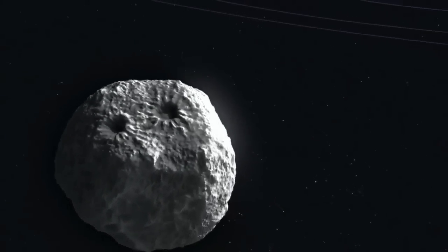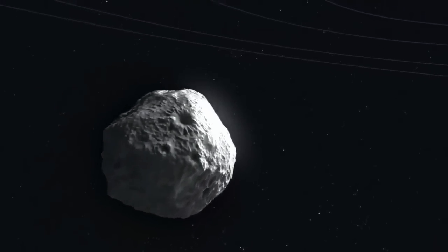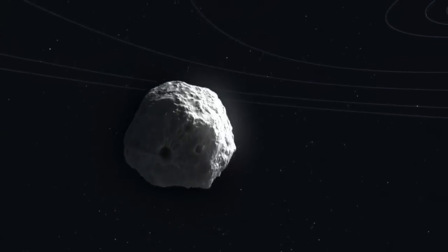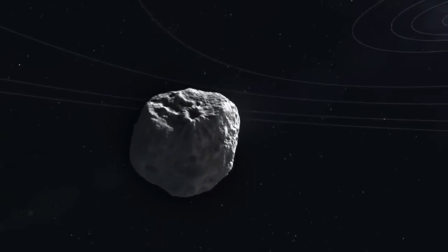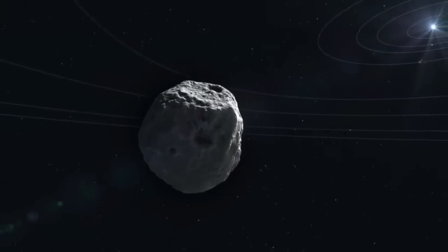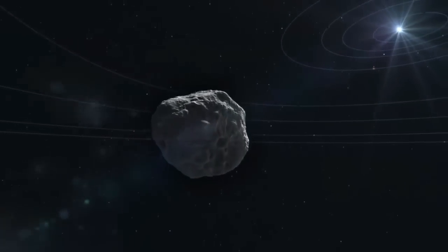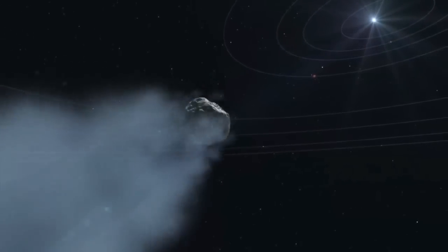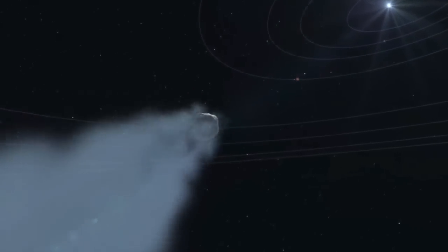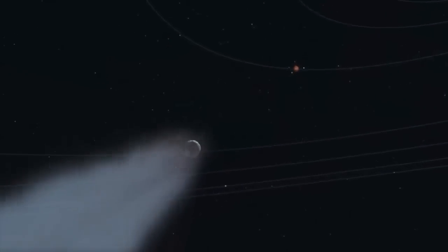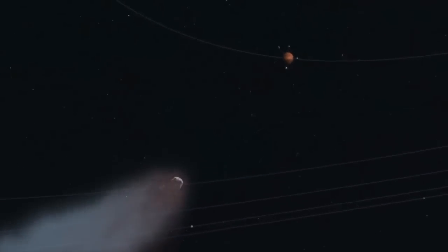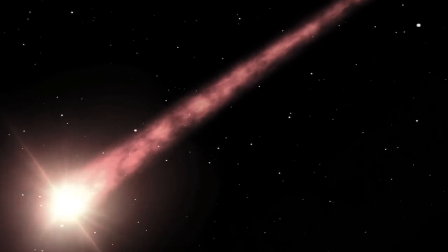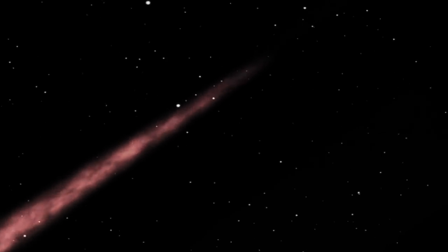Most famously is the mysterious object Oumuamua, one of the first such objects we detected that happened to also be so weird that it has been floated that it might have been artificial. But also there was the very mundane comet Borisov, which would have been an unremarkable comet if it weren't for its interstellar origin, and of course reports of meteorites entering Earth's atmosphere so rapidly that they must be of interstellar origin and the possibility of recovering one.